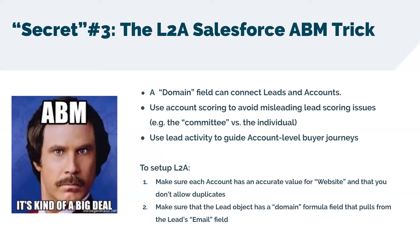Simultaneously, 10 different people from a buying committee at Microsoft all fill out a form. Ordinarily this would be a huge positive indicator. However, they might each only get a score of 20, and your salespeople might not ever notice that anyone from Microsoft came in at all — let alone that 10 people all filled out a form at the same time.